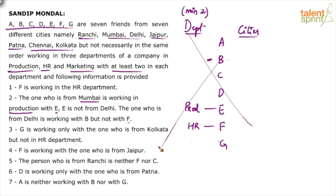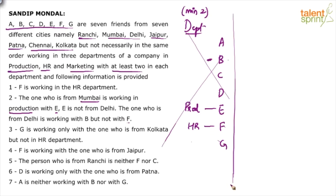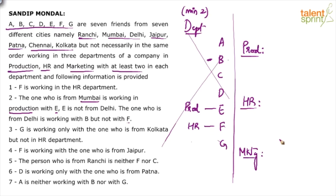What we will do instead is grouping. Grouping will work better in such cases. There are three groups: production, HR, and marketing. Group one is production, group two is HR, and the third is marketing. We will find out who is in production, who is in HR, and who is in marketing, and which cities belong to each department. First point: F is working in HR, so F comes in the HR group.